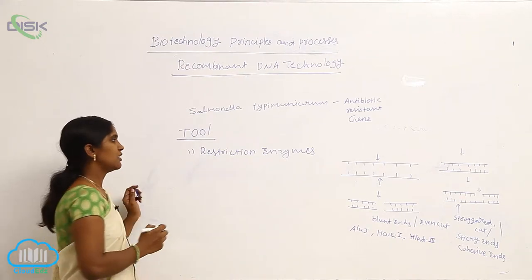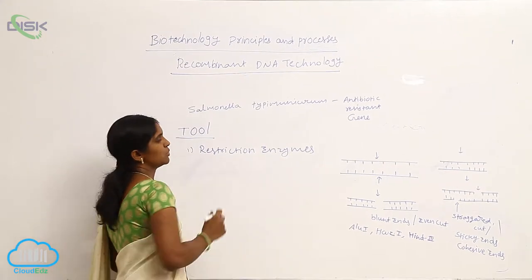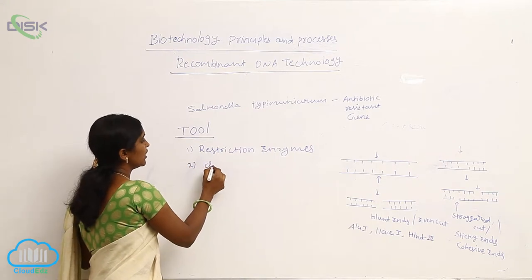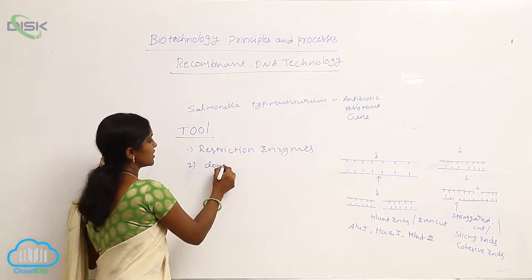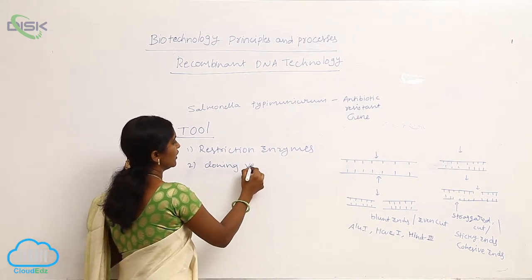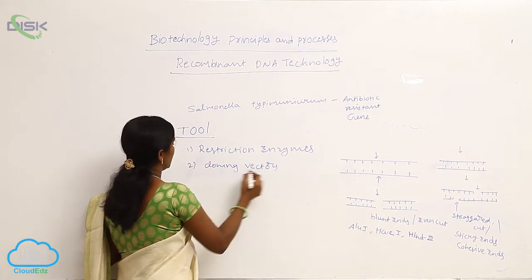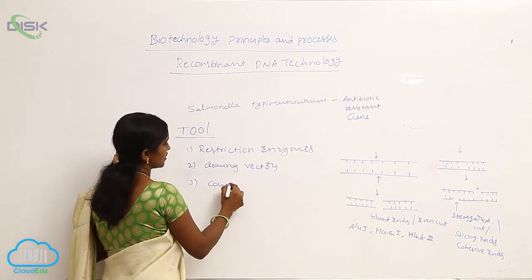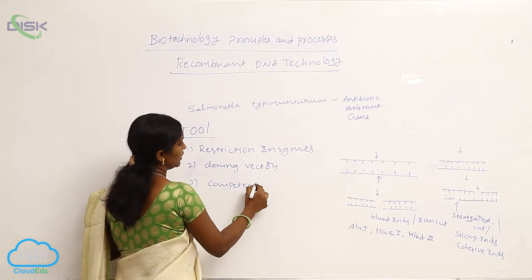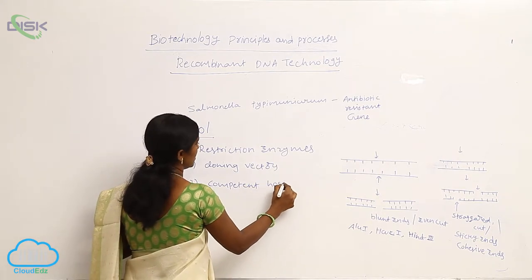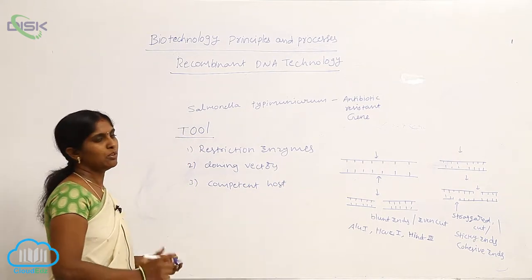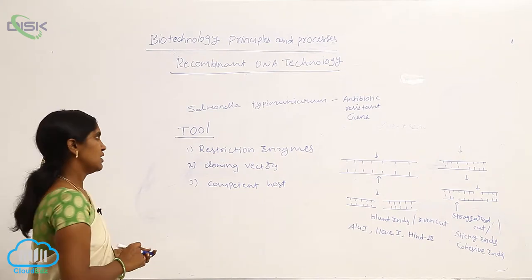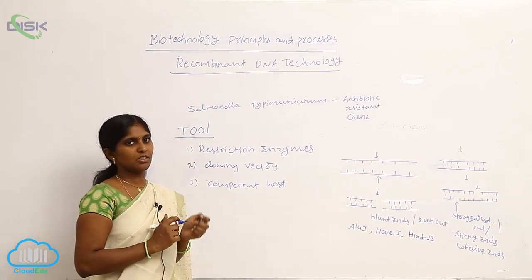The tools required for RDNA technology are: first, restriction enzymes; next, cloning vectors; and competent host. These are the desirable tools for RDNA technology.